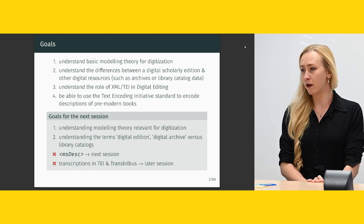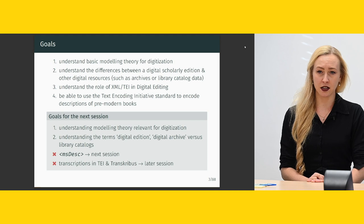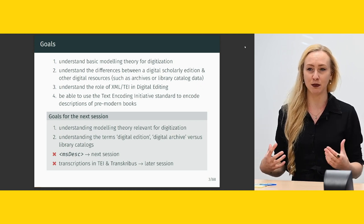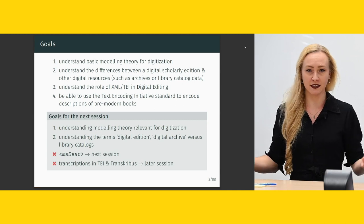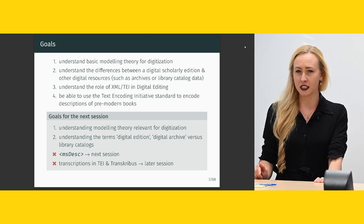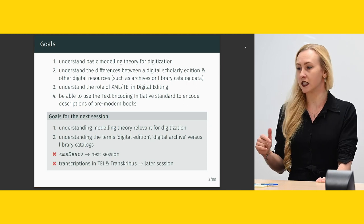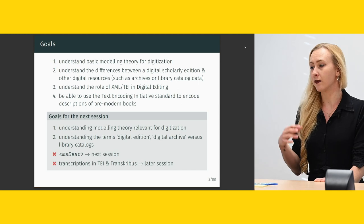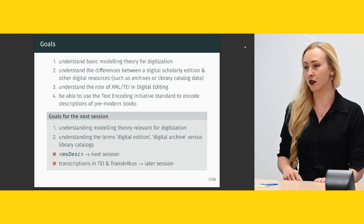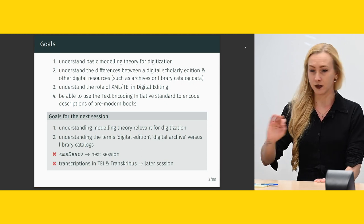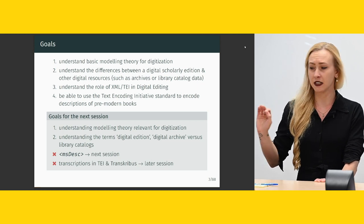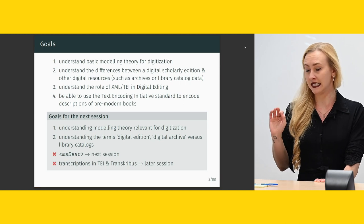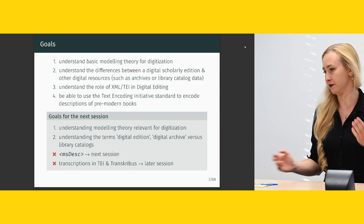The goals for today's session: I want you to understand the basic modeling theory for digitization. In the digital humanities, modeling is a very important concept — some people think it is the defining criterion of digital humanities as a discipline. I want you to understand the differences between a digital scholarly edition and other digital resources such as archives and library catalog data, and to understand the role of XML and TEI in digital editing. For the practical, you should be able to use the Text Encoding Initiative standard to encode descriptions of pre-modern books. What we will not be doing today is MS description or transcriptions in TEI — those are in later sessions.